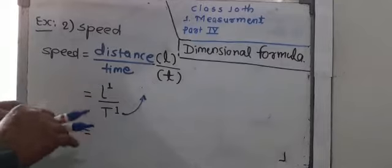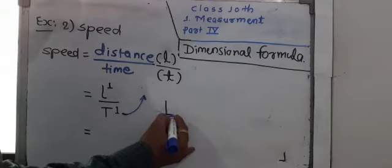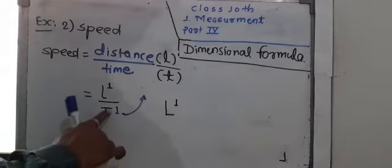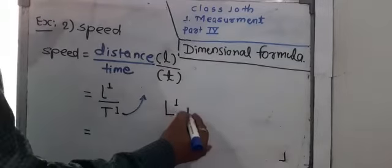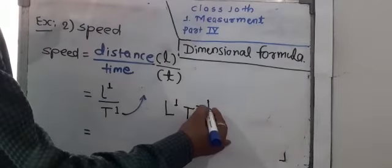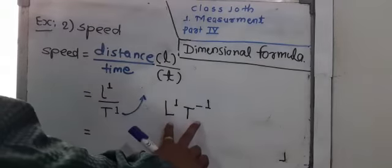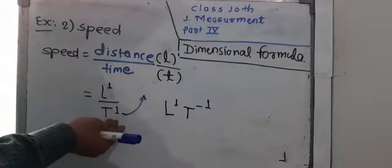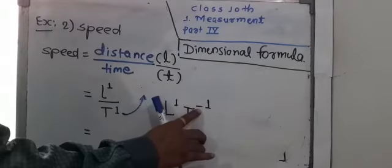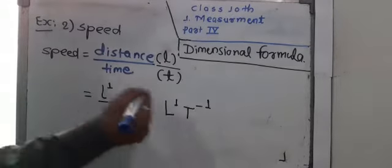It will be written as L raised to 1, taken upside, T raised to minus 1, because previously it was in division form. Now I've written it in multiplication form. If you carry the base value upside, it will be taken as negative. Thus...